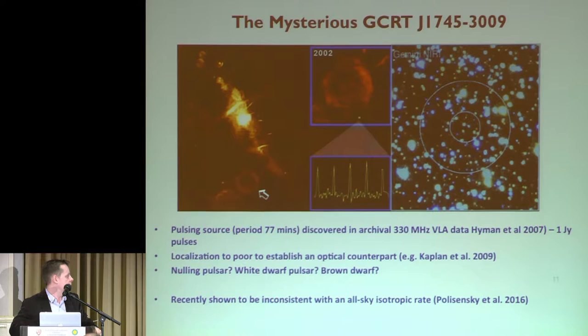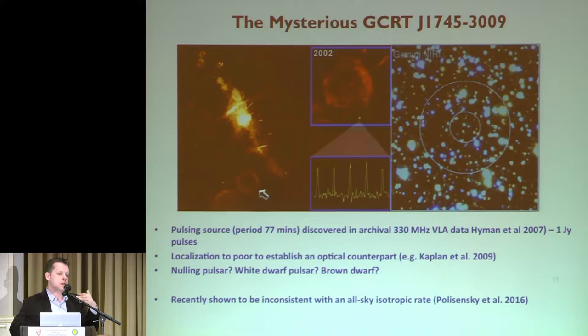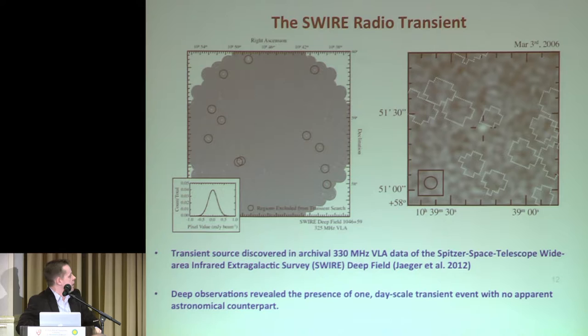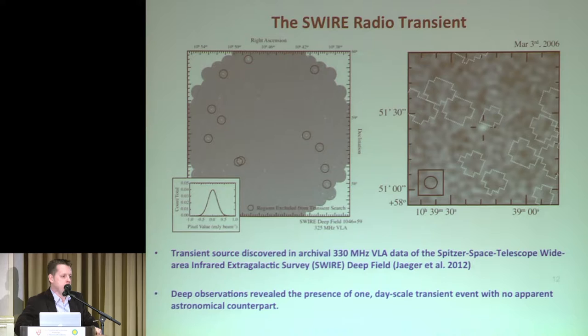It will remain a mystery until we find more of these events at higher spatial resolution and finally localize them. Recent work with VLA's VLite commensal survey data showed that the all-sky rate limits this event from being isotropically distributed — it must have been biased towards the galactic center. This group has also found other, non-pulsing events towards that region, indicating it's a rich regime to pursue. The second example is the SWIRE radio transient, discovered in archival data at the same frequency in the SWIRE deep field — one transient event with no host galaxy, no counterpart, which also remains unexplained.